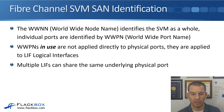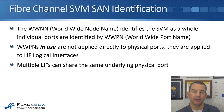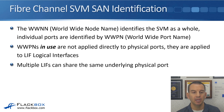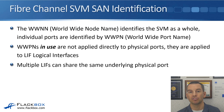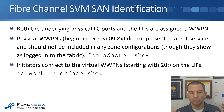Some more details about Fibre Channel: the WWNN is the Worldwide Node Name and identifies the SVM as a whole — that's the equivalent to the IQN in iSCSI. Individual ports are identified by the WWPN, the Worldwide Port Name. The WWPNs in use are not applied directly to physical ports; they are applied to the LIF logical interfaces. If a logical interface is used for NAS or iSCSI, it has an IP address. If used for Fibre Channel or FCoE, it uses a WWPN. Multiple LIFs can share the same underlying physical port.